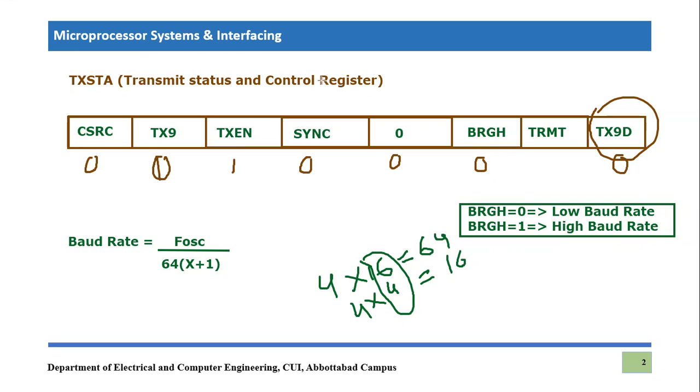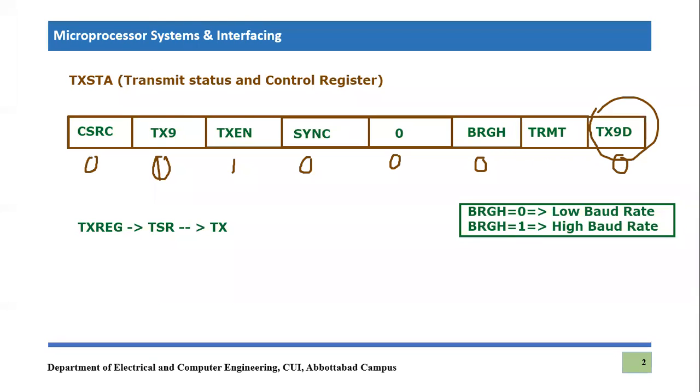Next bit is TRMT bit. And that is basically related to, if you remember, we have discussed TSR register or transmit shift register. If you remember, whatever the information we wanted to transmit, we will move that information into transmit register or transmitter register. And then there will be framing done by TSR register, which is called transmit shift register.